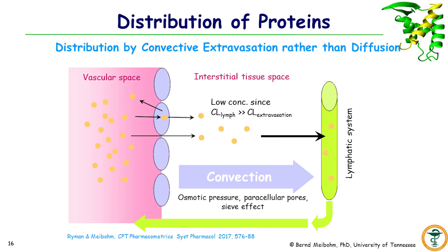In contrast to small molecule drugs, therapeutic proteins are largely distributed in the body by convective extravasation rather than diffusion. Convective extravasation entails the fluid flux from the vascular space into the interstitial space and then its drainage through the lymphatic system. There is a constant flow of fluid from the vascular to the interstitial space and into the lymphatic system, where it is ultimately drained into the venous bloodstream.